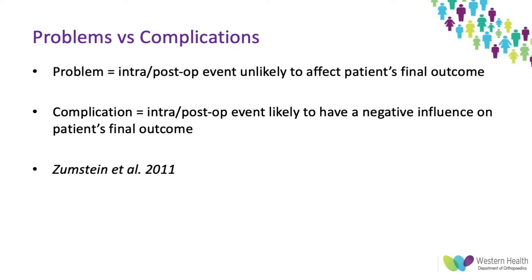In terms of this talk, I'm going to be firstly going through what are called problems versus complications. Problems are events that are unlikely to affect the patient's final outcome, whereas complications are events that are more likely to have a negative influence on the patient's final outcome. These definitions come from a large systematic review back in 2011 — the Zumstein review — which is where I've pulled a lot of the data from.